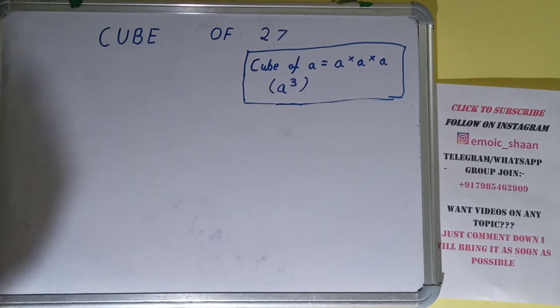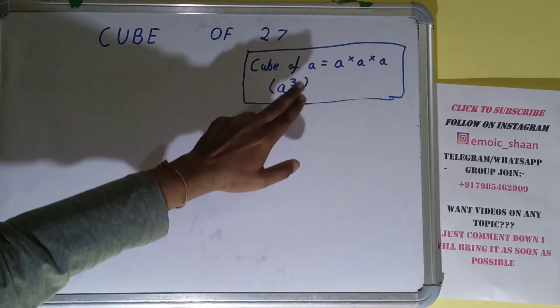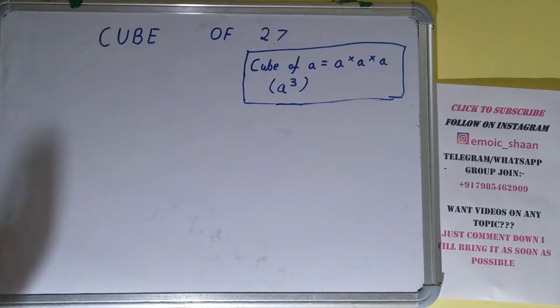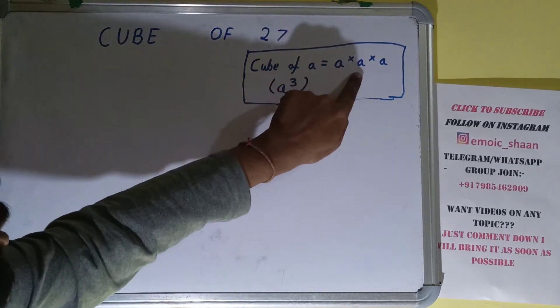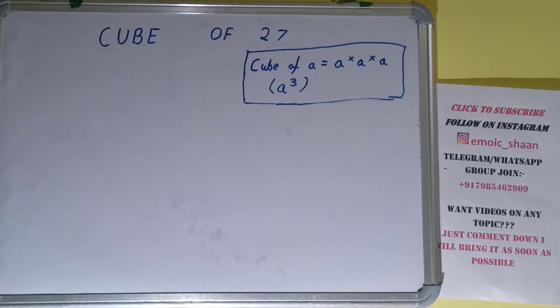Let's say we want the cube of a, where a is an integer. Then we need to do a into a into a - that is how we can get the cube of a. One more thing: cube of a can also be written as a³.